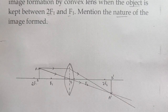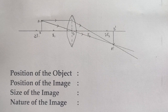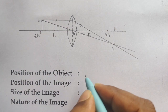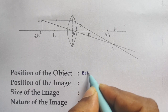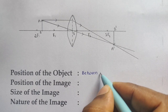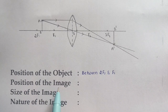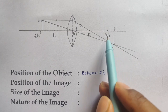Based on this ray diagram, let us draw the conclusions. The position of the object is in between 2F1 and F1. The image formed, marked as A-dash B-dash, is located beyond 2F2 on the other side of the lens.